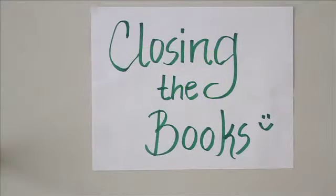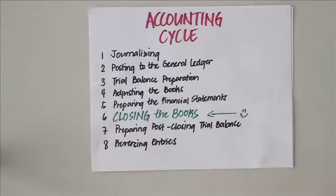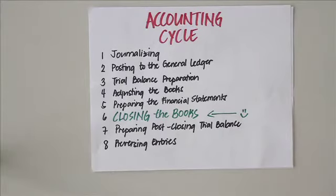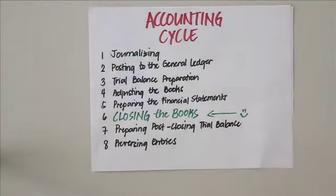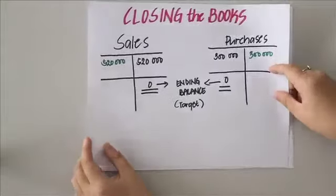Today we're going to be talking about closing the books. Closing the books is the sixth step in the accounting cycle, done after the financial statements are prepared. Basically, when you close the books you reduce the account balances to zero.